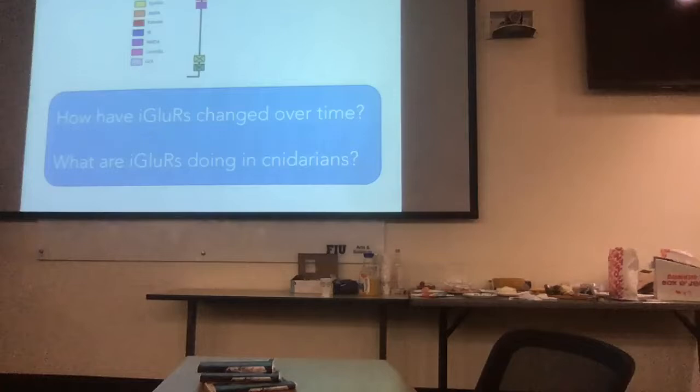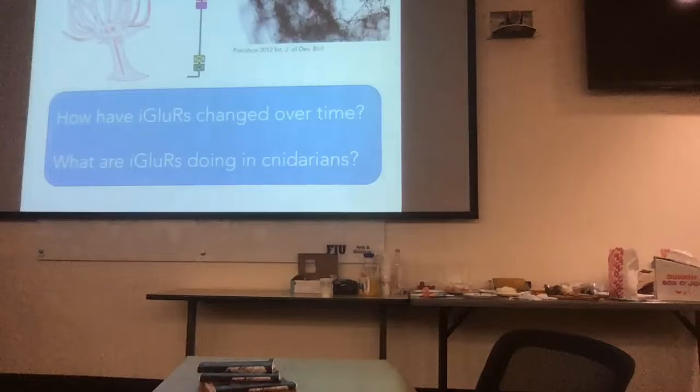To research this, I have my model anemone, Exaptasia pallida. I want to remind you these guys don't have a centralized nervous system. Instead, they have this beautiful nerve net, which is a dispersed nervous system. It's almost like they have a nice big catch-all for everything that goes on, and it leaves in between all the different cells.